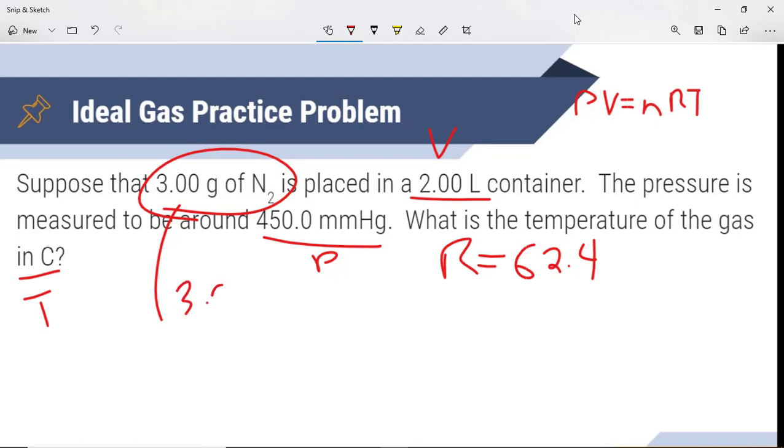So we have 3.00 grams of nitrogen. Grams on the bottom of the next step to moles. Remember that it is N2. So we're going to take that 14.01. We're going to make it 28.02. Awesome. Let's do some math. We do the math. We get our mole number. And now we can plug into PV equals nRT.